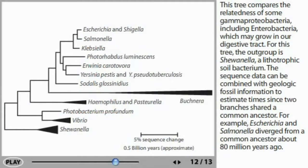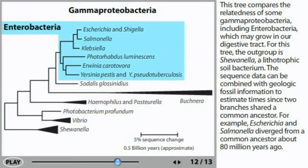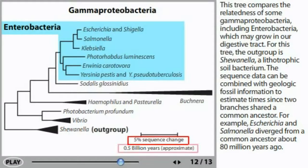This tree compares the relatedness of some gamma proteobacteria, including enterobacteria, which may grow in our digestive tract. For this tree, the outgroup is Shewanella, a lithotrophic soil bacterium. The sequence data can be combined with geologic fossil information to estimate times since two branches shared a common ancestor. For example, Escherichia and Salmonella diverged from a common ancestor about 80 million years ago.